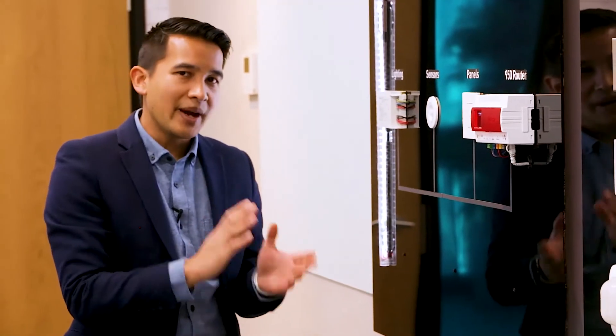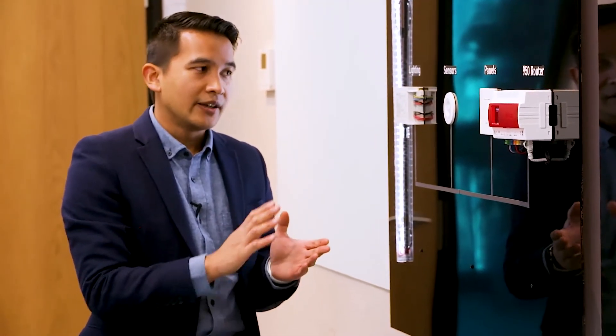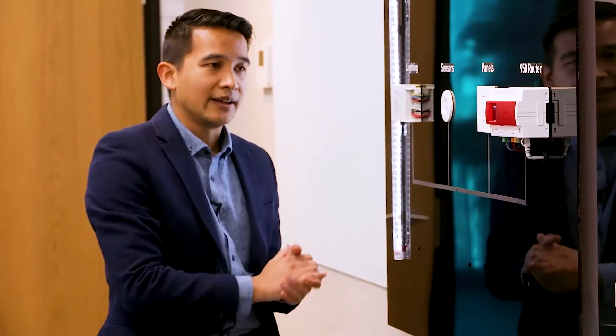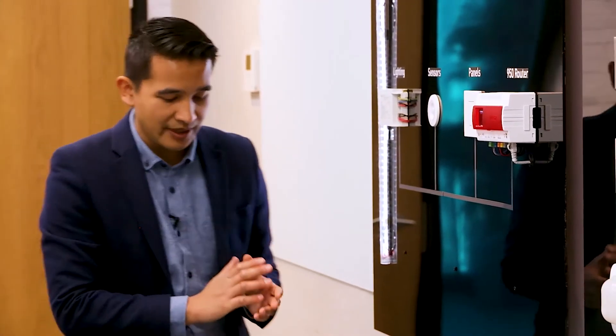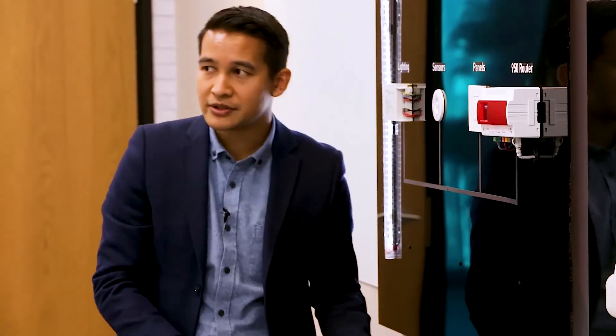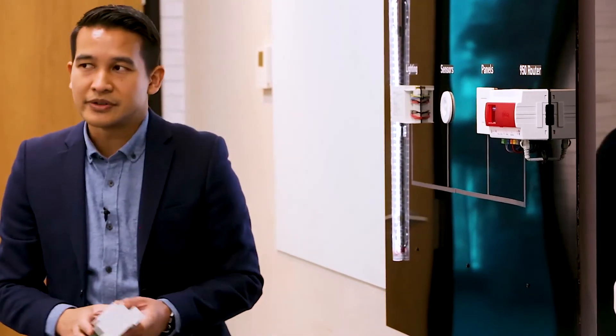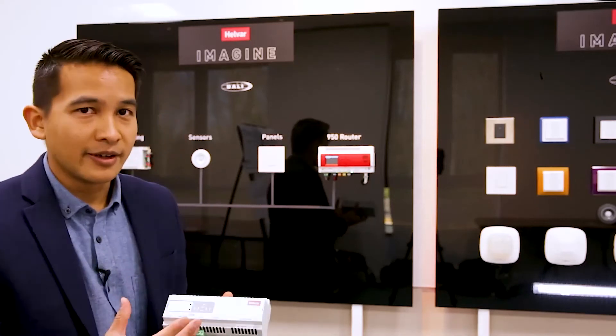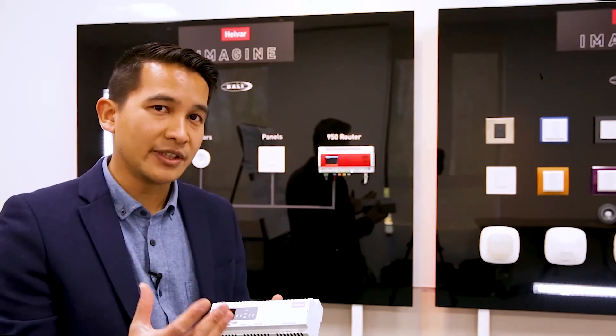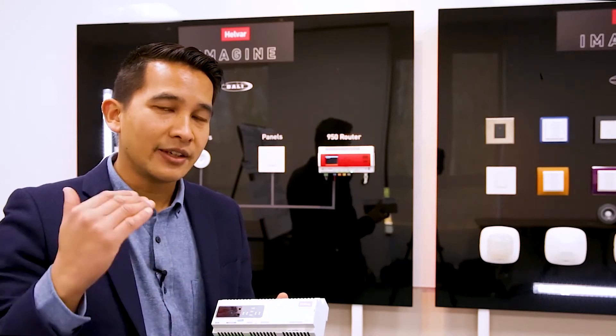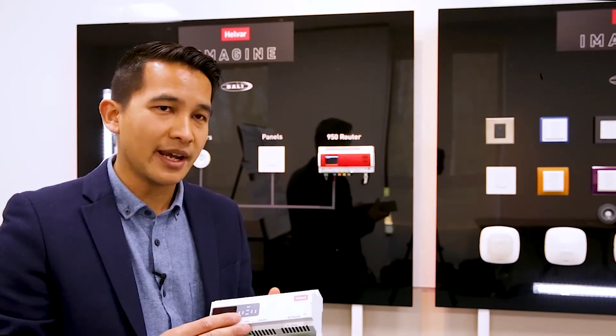And also being an Imagine router, not only can you connect DALI 2 panels with the 950, but you also have access and connectability to all the Imagine Digidim controllers, such as your dimmers, your relays, and your sensors and panels that we have in the Digidim range. This adds the unique products on top of the DALI standard.